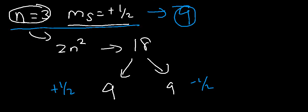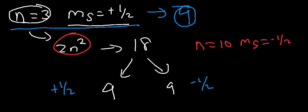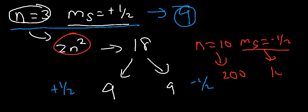For another example, let's say N is 10 and MS is negative 1/2. Based on the equation 2N², you have a maximum of 200 electrons in the 10th energy level. However, half of those will have a spin of negative 1/2, so the answer will be 100.